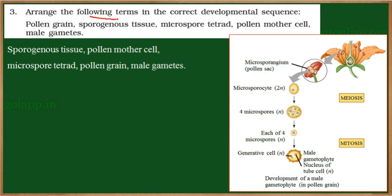Arrange the following terms in the correct developmental sequence: pollen grain, sporogenous tissue, microspore tetrad, pollen mother cell, male gametes. Here there are different kinds of cells and we need to arrange them in the particular order in which they are formed.